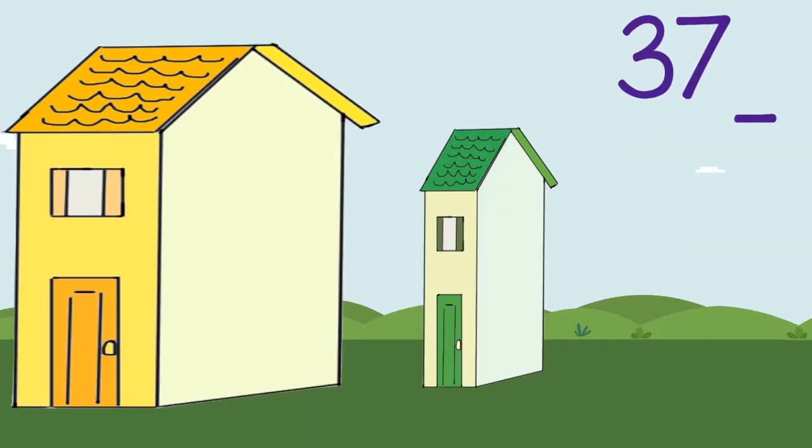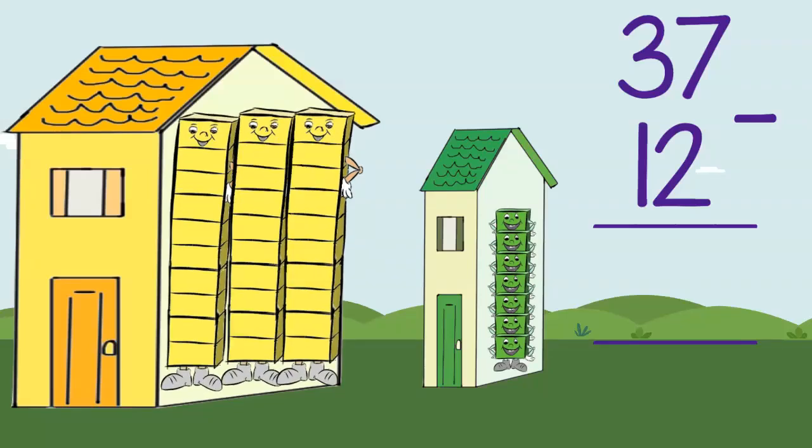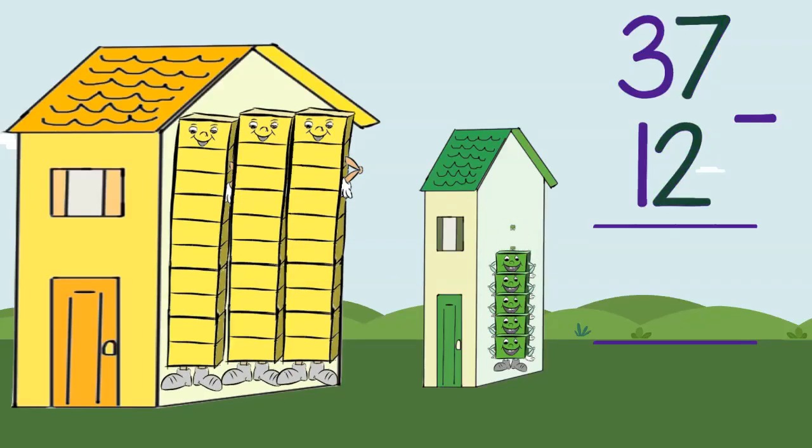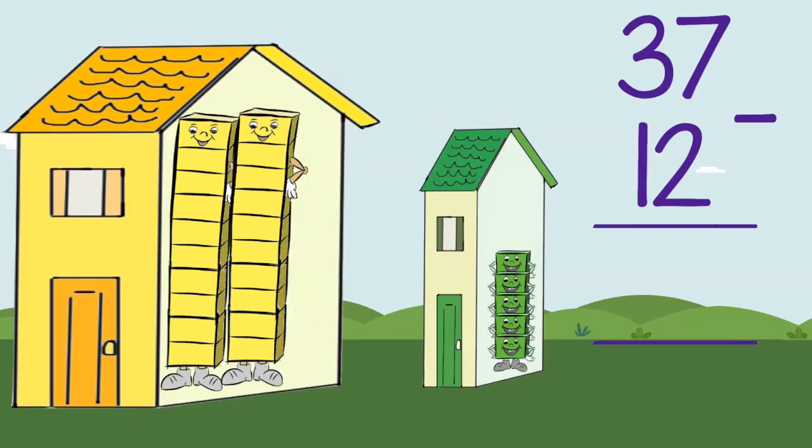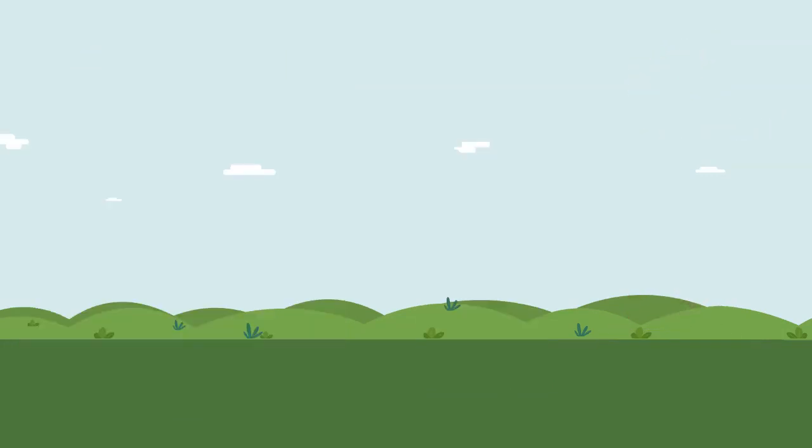37 take away 12. Cross out two ones and you're left with five ones. Take out one group of tens. You are left with two tens. The number that amazingly appears is 25. This is what we did.